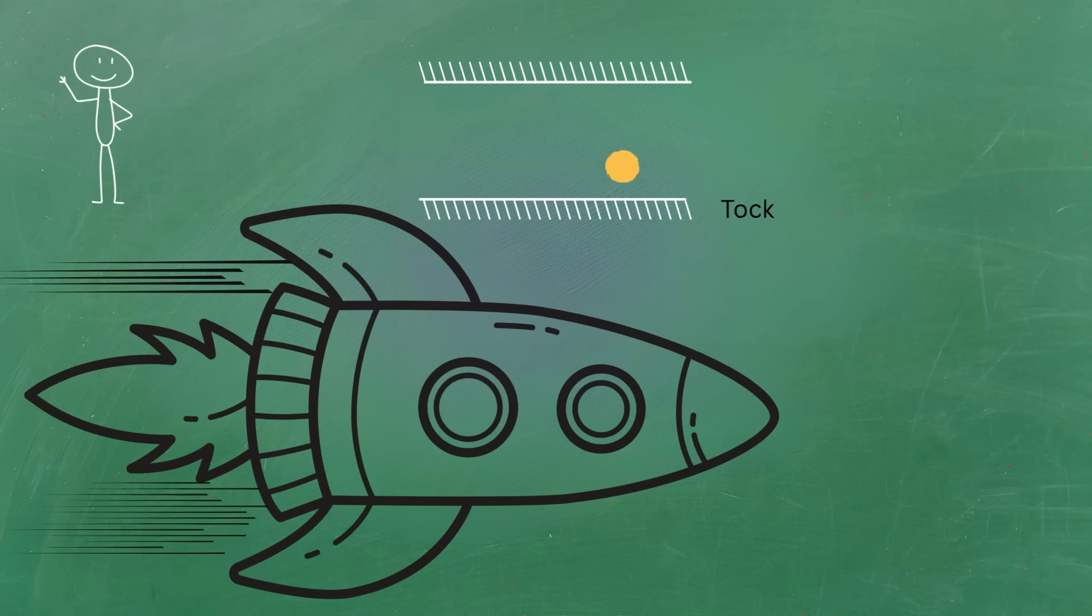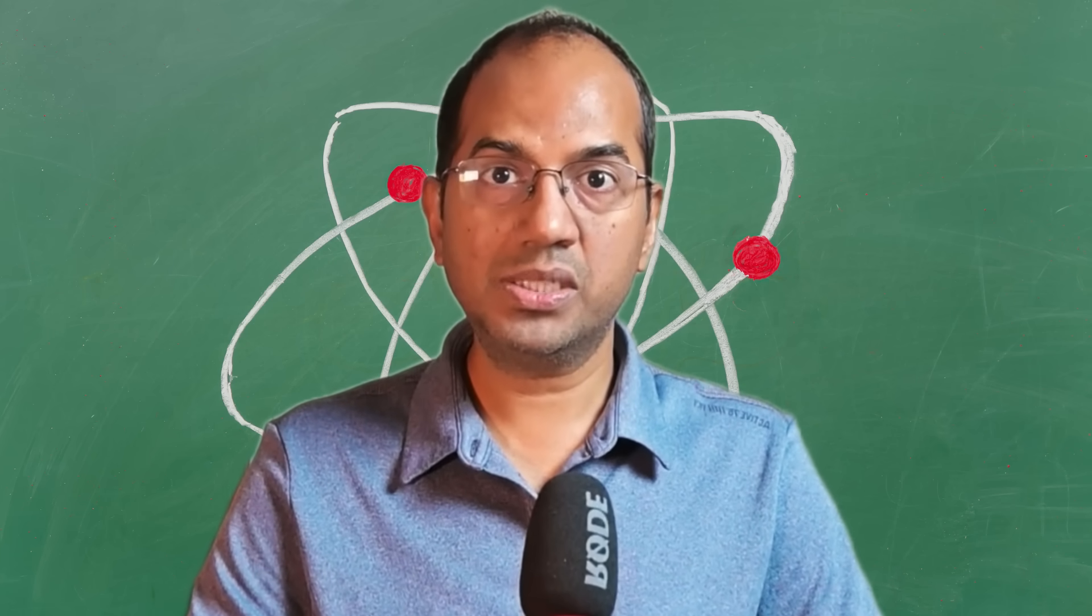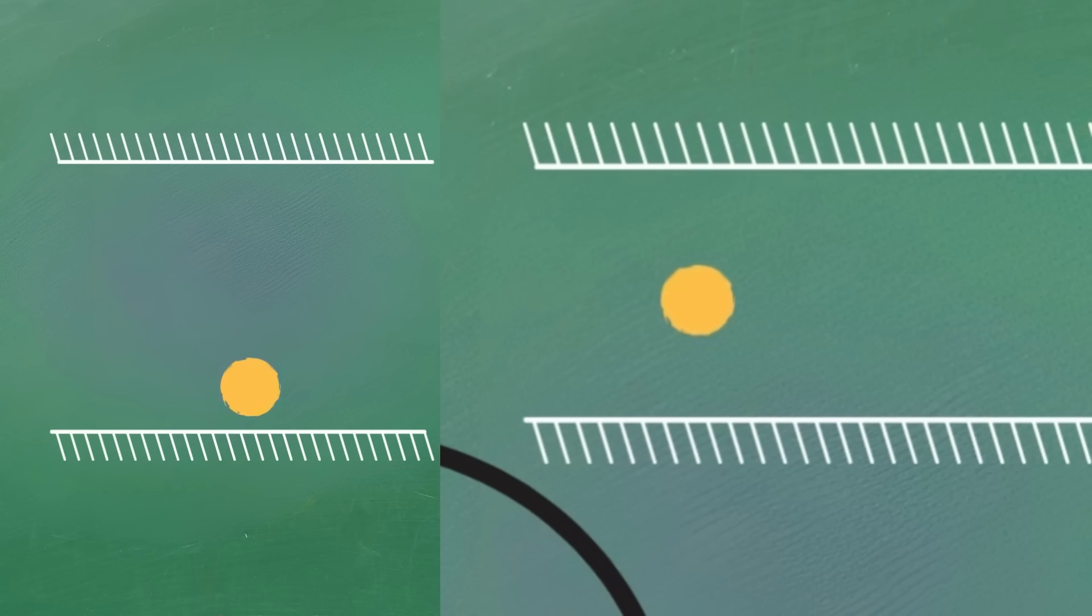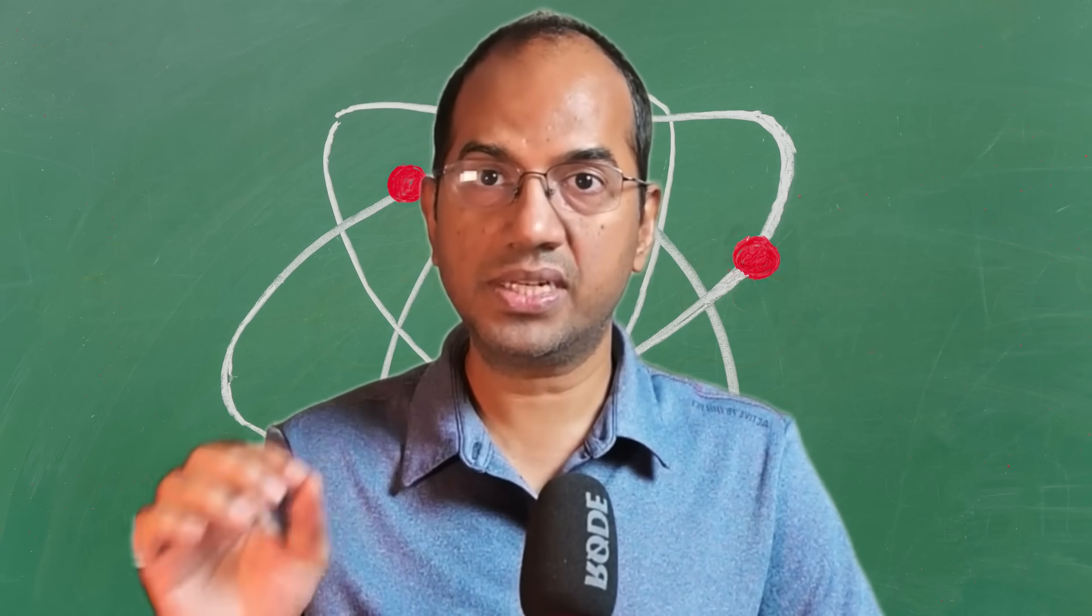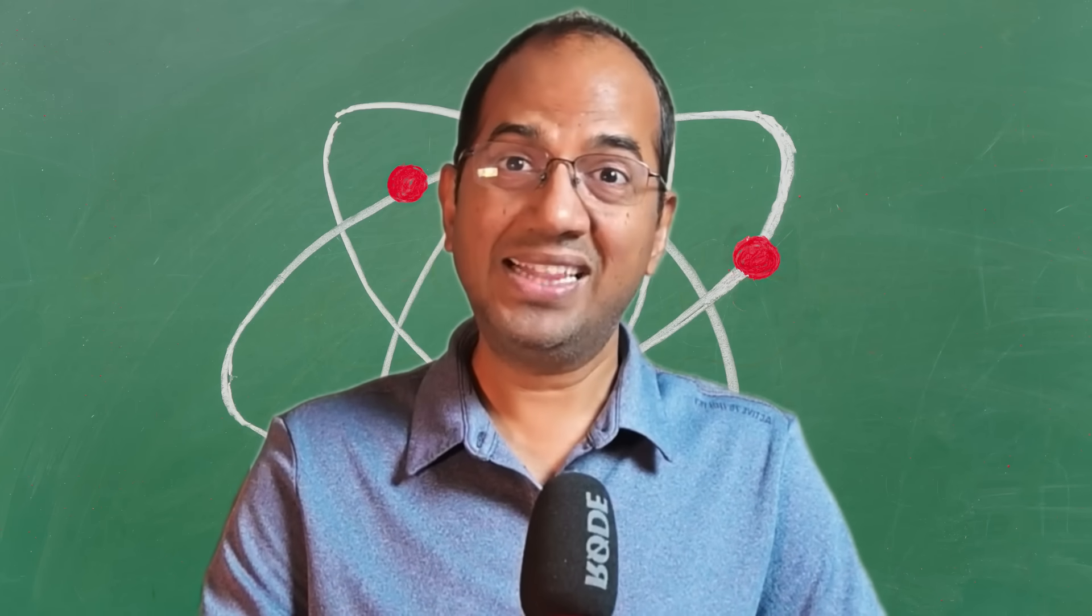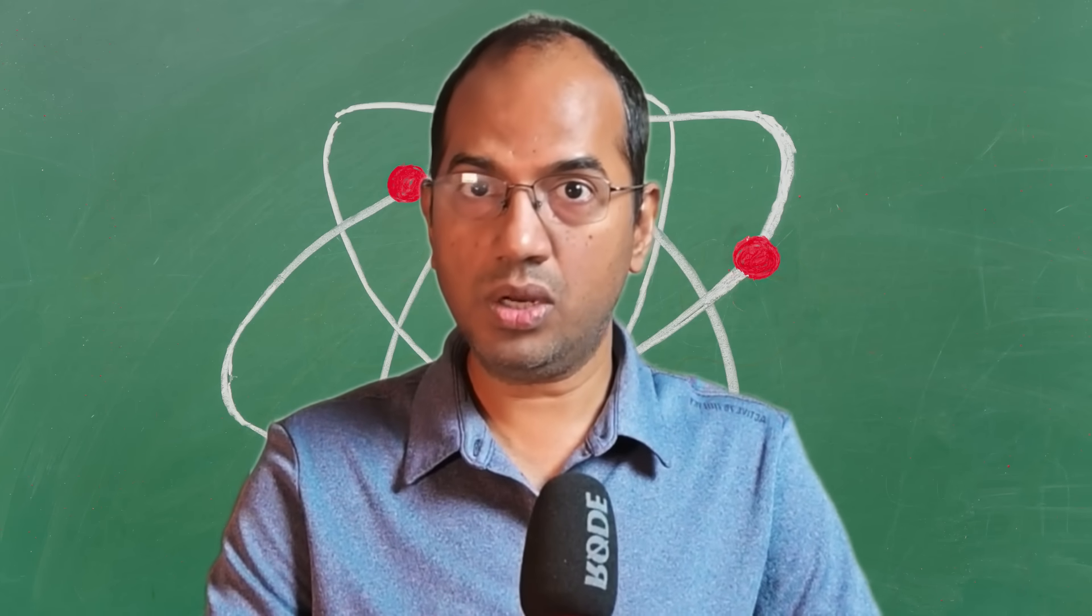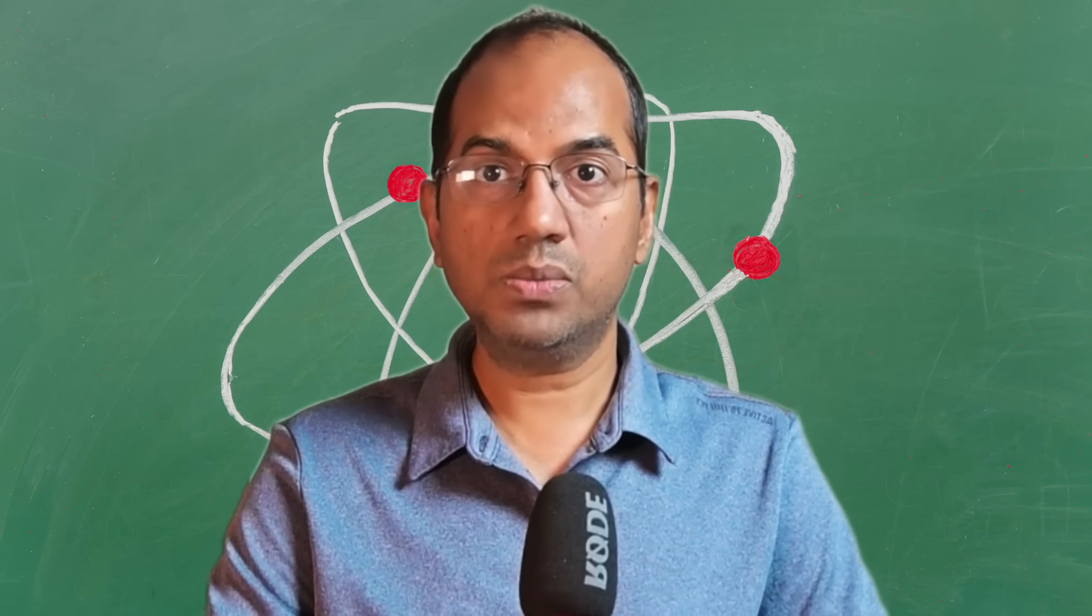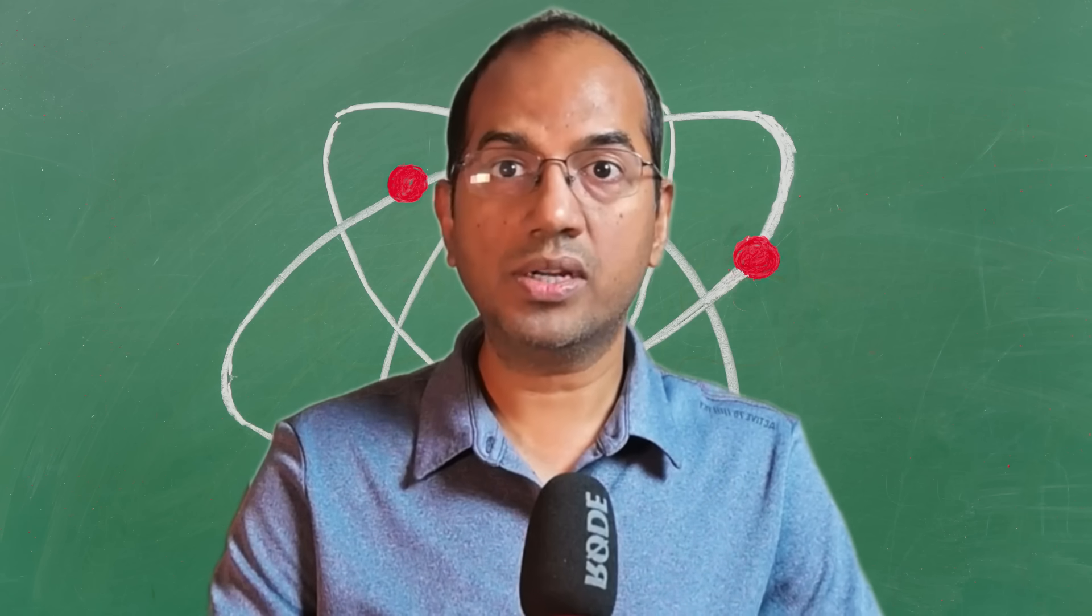But here is the mind-bending part. Both you and the astronaut have to measure the speed of light, or speed of photon in this case, at the exact same value, the speed of light. And that's the unbreakable second rule. But you can see the photon take a longer distance. And if speed equals distance by time and the speed must stay the same while the distance has gotten longer, then the only possible conclusion is that the time for that journey must have gotten longer too.